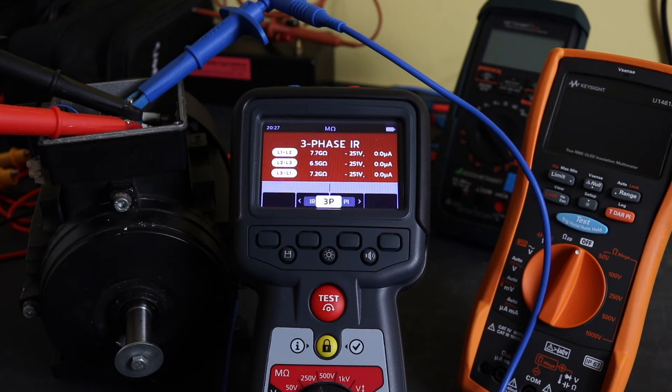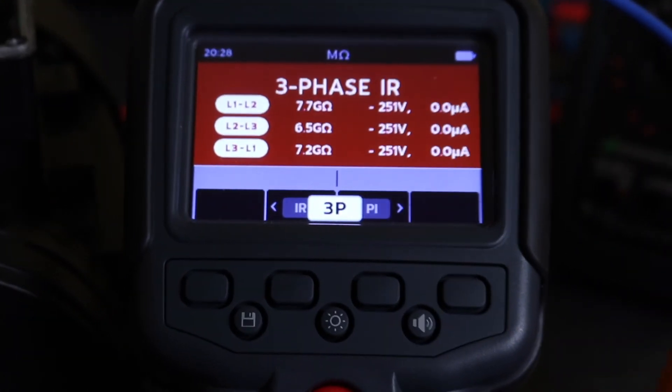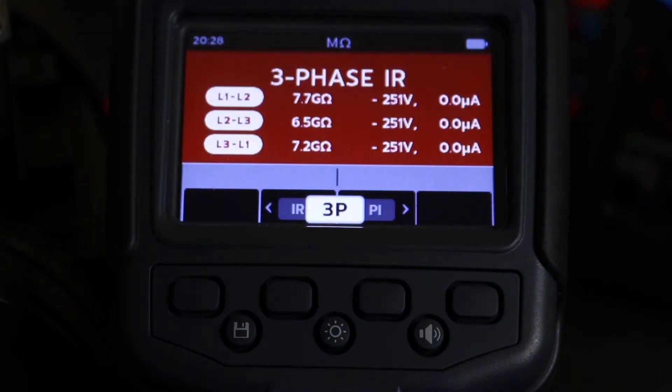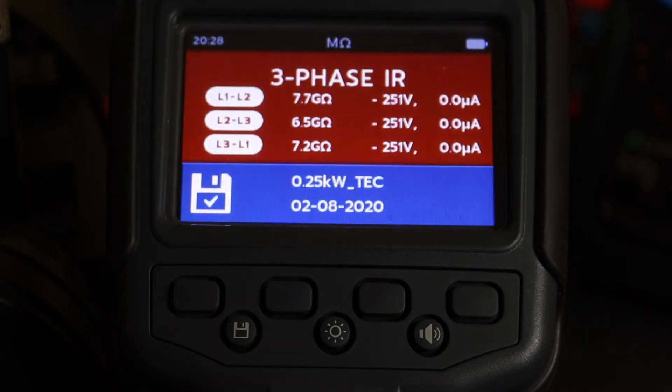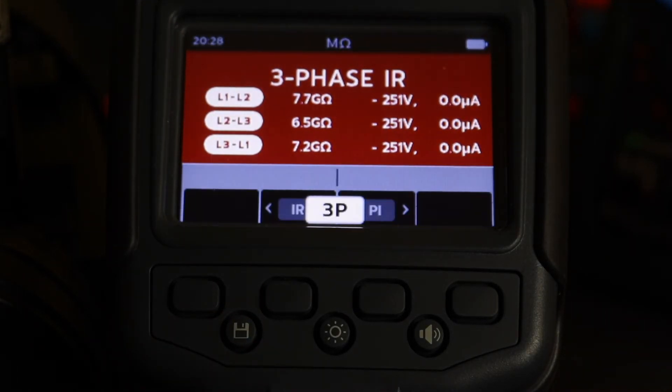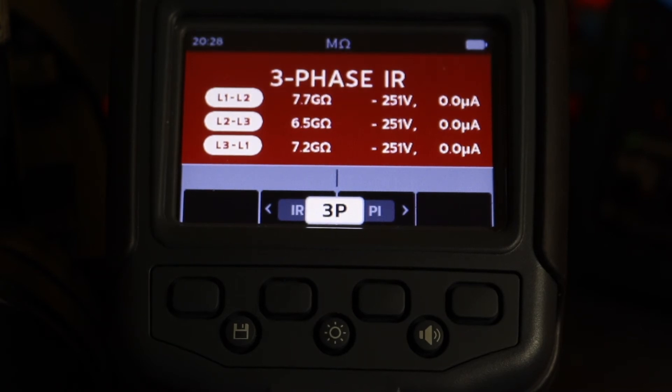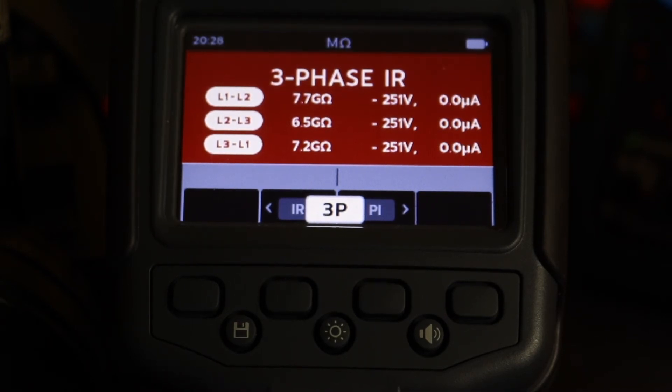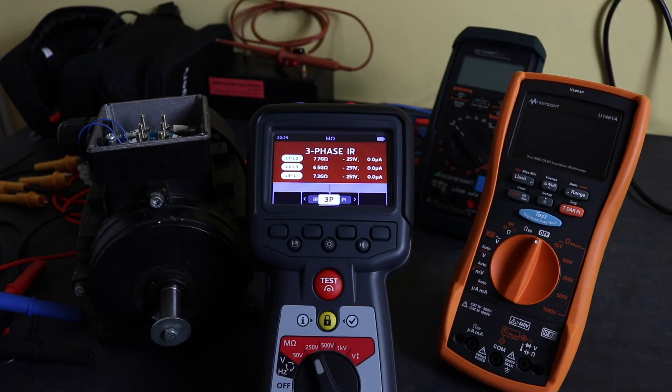There you go. That's the result done. So it gives you quite a nice screenshot at the end. Let's zoom into him a little bit, hopefully. Yeah, so it gives me a nice little summary of the test there. Obviously I can save that. And it gives me the resistance reading between each of the phases, test voltage, and the current, which it doesn't have enough resolution to display the current. So that's that test completed.